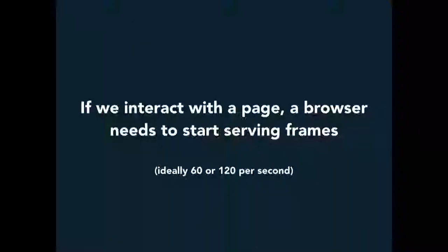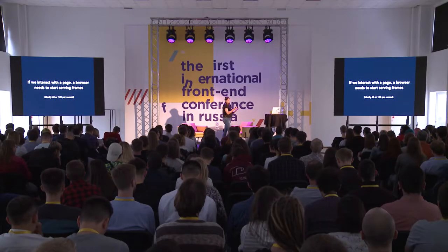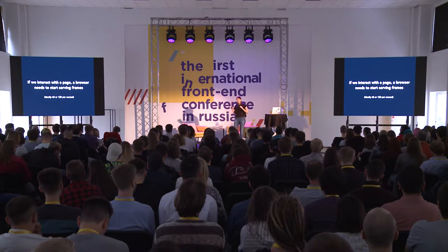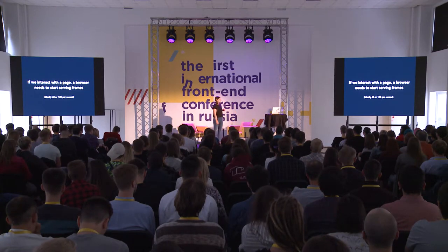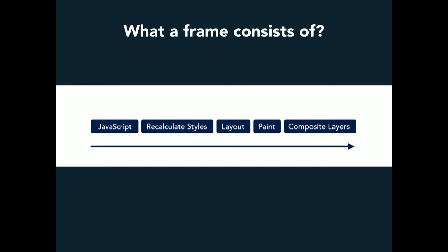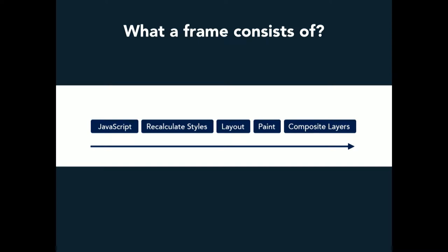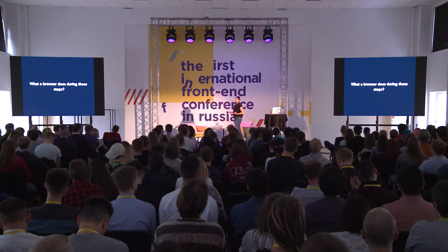The bottom line is: if we interact with a page in any way — hovering, scrolling, clicking elements — the browser needs to start serving frames because something changed. Each frame needs to be served, be it 60 or 120 frames per second. A typical frame consists of JavaScript, recalculation of styles, layout, paint, and compositing layers. Let's go through all these steps to figure out what the browser is doing at each one. During the first step, a change happens and an event is fired — it doesn't have to be JavaScript; it can be hovering or scrolling.